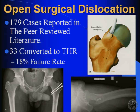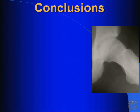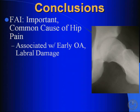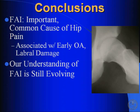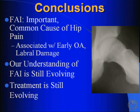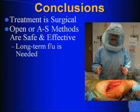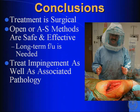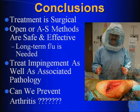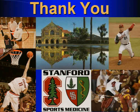For open surgical dislocation surgeries, only 179 cases are reported in the peer-reviewed literature with an 18% failure rate. So in summary, FAI is an important cause of pain in the patient. It may be associated with early arthritis, but our understanding is still evolving, as is the treatment. It is a surgical problem — you can do this arthroscopically or open — but you have to treat the impingement as well as the pathology. And it remains unclear whether or not we can prevent arthritis. Thank you.